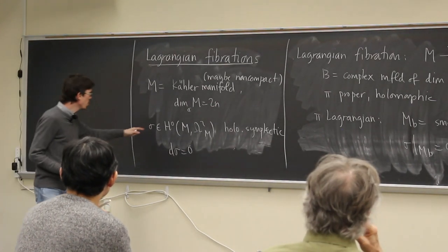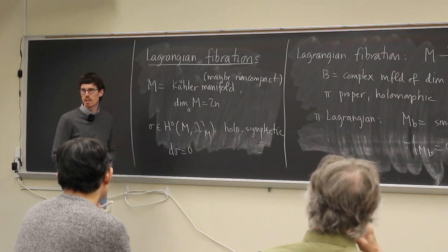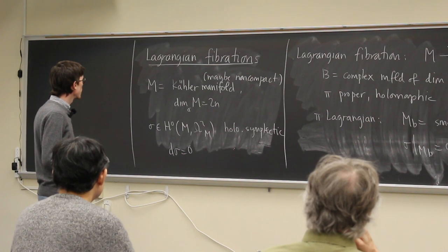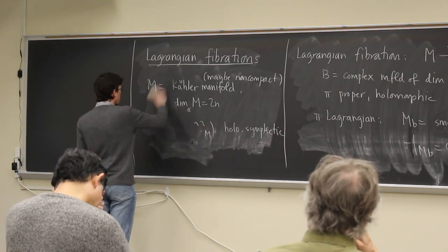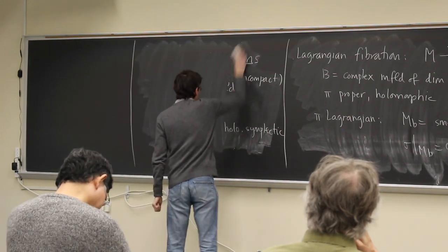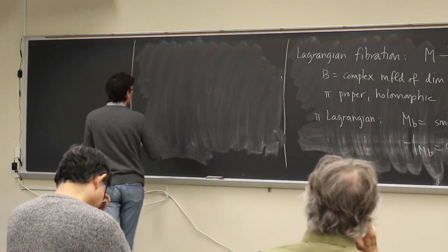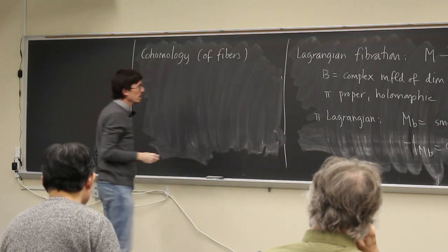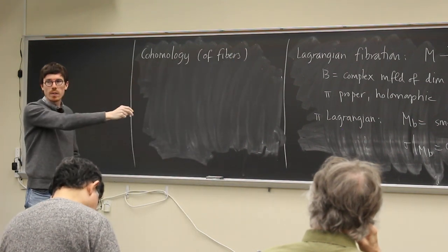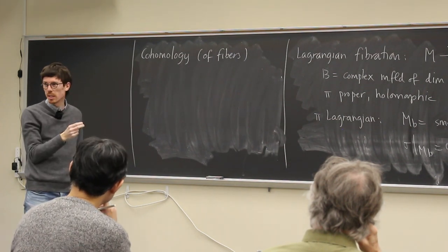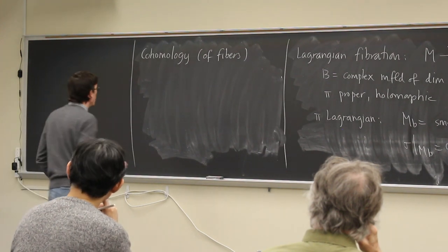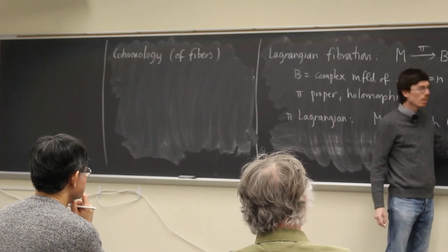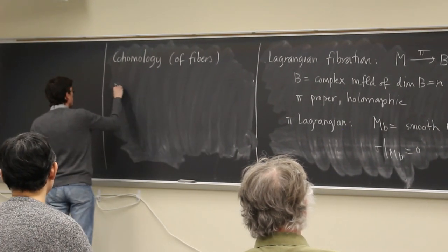The setup is: we have M mapping to B, the main players are the symplectic form σ and the Kähler form ω. What I'm interested in is the cohomology of the fibers. There's nothing interesting going on at the smooth fibers — they are just compact complex tori, abelian varieties. The tricky thing is what happens at the singular fibers. Since there are singular fibers, the natural thing to do is to use the decomposition theorem in the language of perverse sheaves. That's the way you study things with singular fibers.